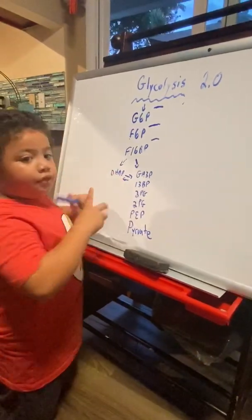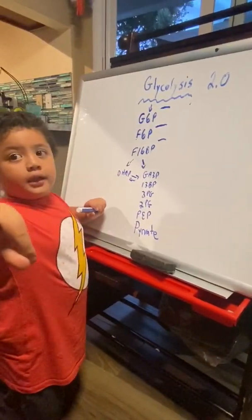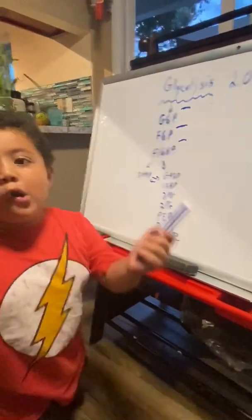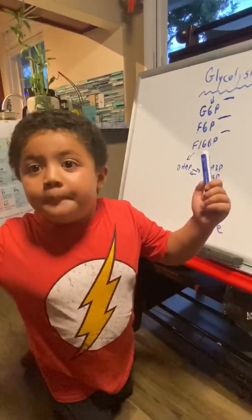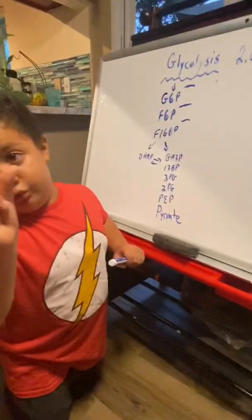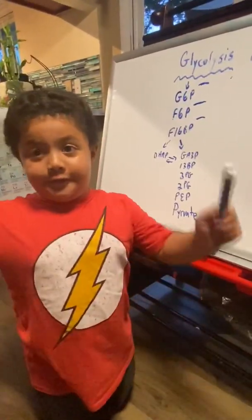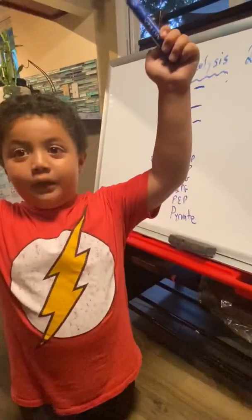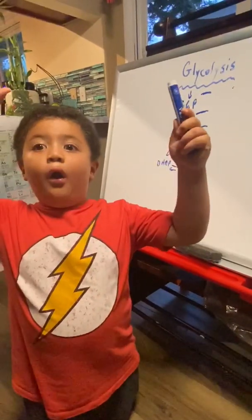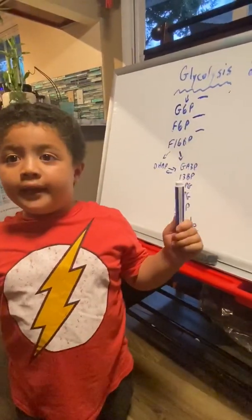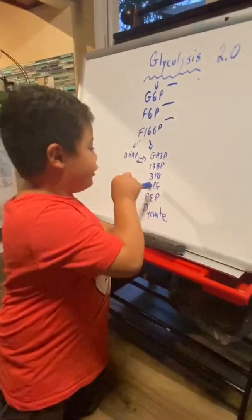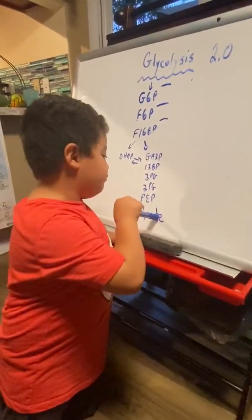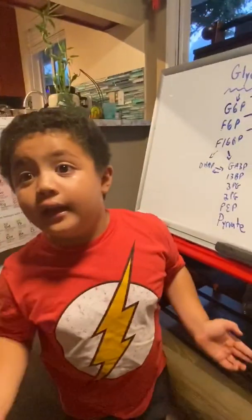Now, 3-phosphoglycerate is going to become 2-phosphoglycerate — how? Phosphoglycerate mutase, kids. Now, 2-phosphoglycerate is going to become phosphoenolpyruvate — how? Enolase, kids. Now, phosphoenolpyruvate is going to become pyruvate — how? Pyruvate kinase.